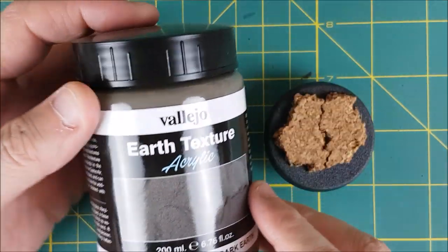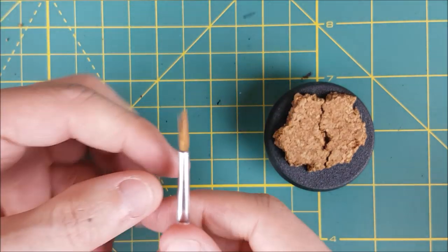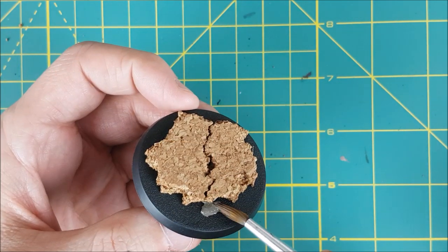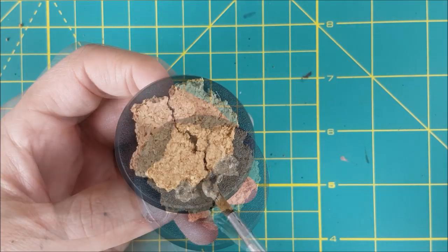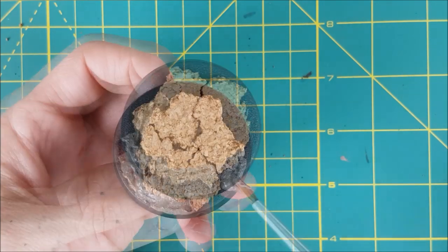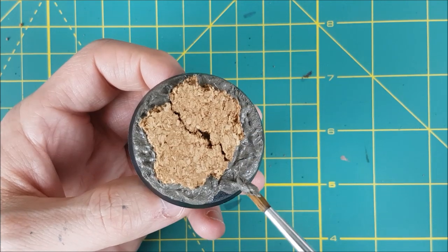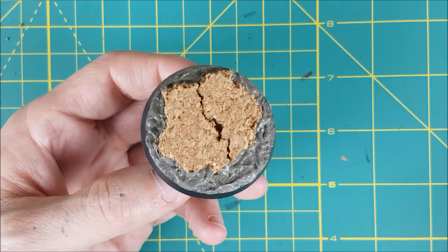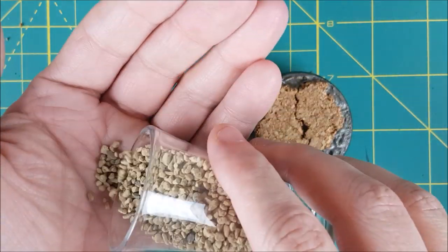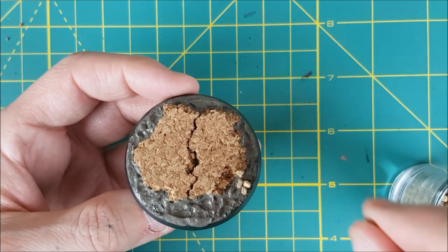After 10 minutes or so, I'm moving on to some earth texture. Any earth texture will do for this. I'm using Vallejo Earth because it's relatively cheap, but you can also use sand and pebbles if you want. Just put down a layer of PVA glue and sprinkle your sand and pebbles onto that. One thing that's great about the earth texture is you can also use it as a glue to anchor down other things. I'm going to add a few rocks to this base just by pressing them into the earth texture.